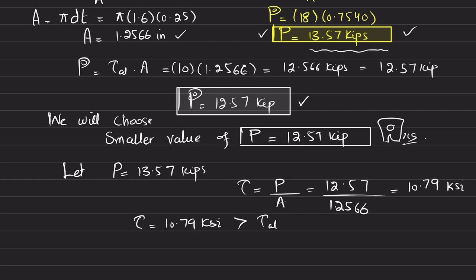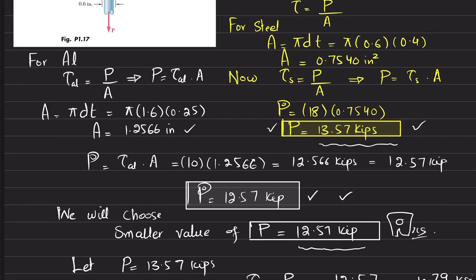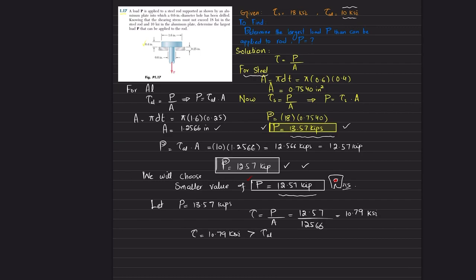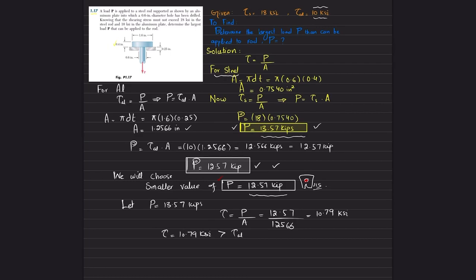This 10.79 ksi shearing stress will develop in the aluminum, which is greater than the allowable shearing stress in aluminum of 10 ksi. So it means that due to this load it will fail. But using this smaller value of P, 12.57, it will satisfy aluminum as well as steel. That's why we choose the smaller value of P.